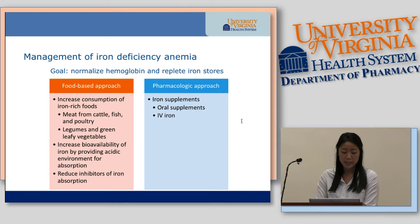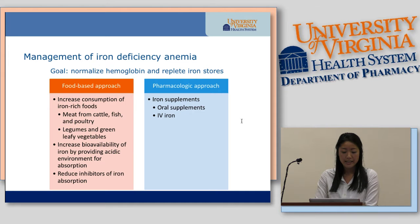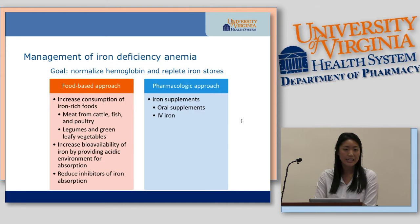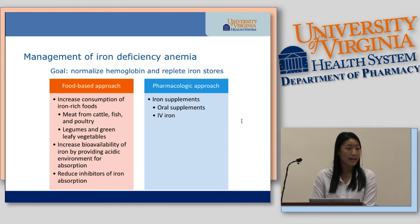Looking at management of iron deficiency anemia, the goal is to normalize your hemoglobin and replete your iron stores. You can take two approaches: a food-based approach or a pharmacologic approach. For a food-based approach, you can increase consumption of iron-rich foods such as meat from poultry, cattle, and fish, or increase intake of legumes and green leafy vegetables. You can increase the bioavailability of iron by providing an acidic environment — this is why we tell patients to take it with orange juice or vitamin C — or reduce inhibitors of iron absorption such as calcium, tannins, and H2 blockers and PPIs. Pharmacologically, we turn to oral iron and IV iron supplements.